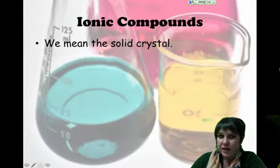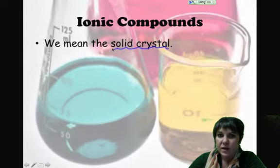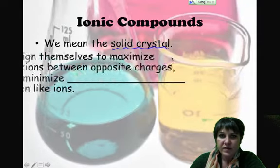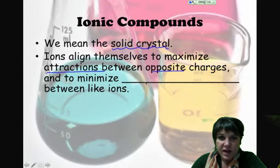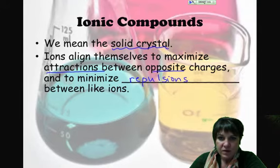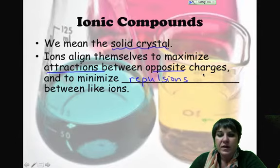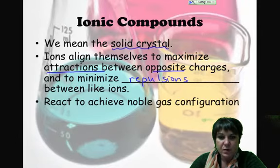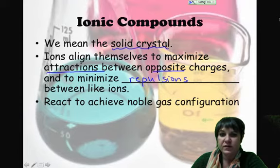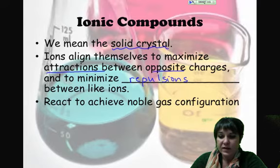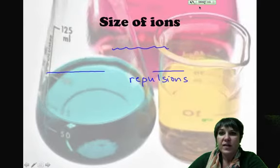When we talk about ionic compounds, we're talking about this solid crystal that is formed when positive and negative charge ions align themselves in such a way that it maximizes the attractions between opposite charges and minimizes any repulsions between like ions.